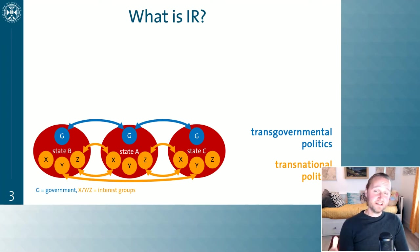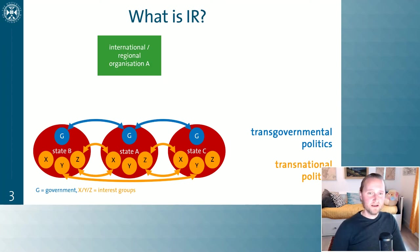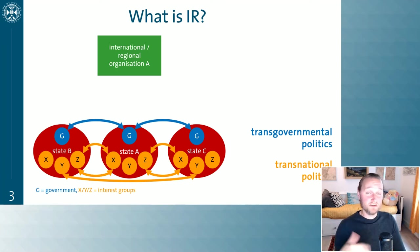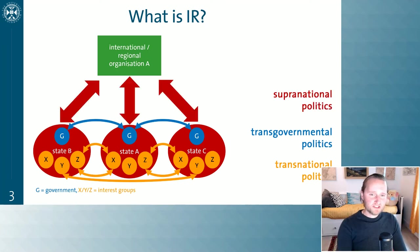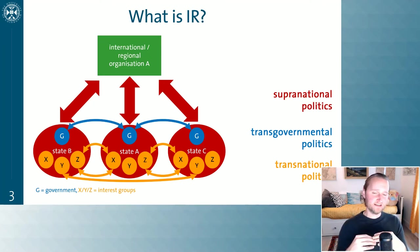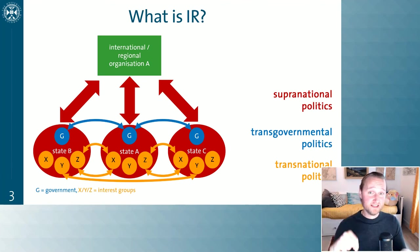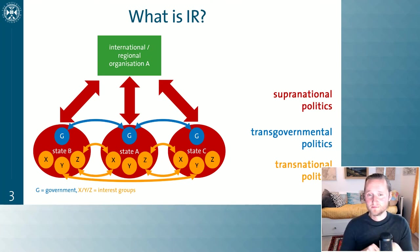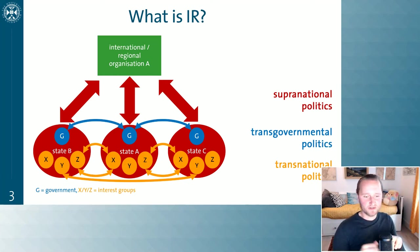Obviously, states aren't just interacting with each other — they are also interacting with international organizations. I've already mentioned the EU and the UN. Whenever states interact with those international organizations, they are doing something we call supranational politics. This is politics that goes on in arenas that lie above the nation state, when states interact in international or regional organizations or institutions.